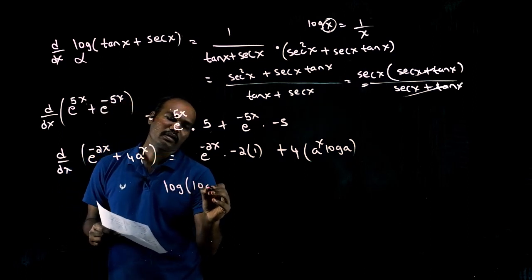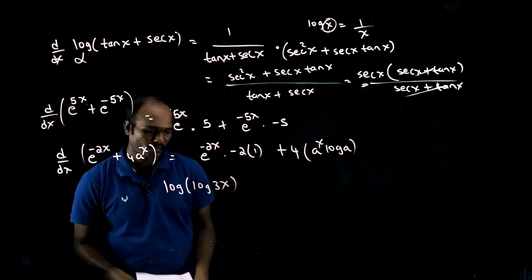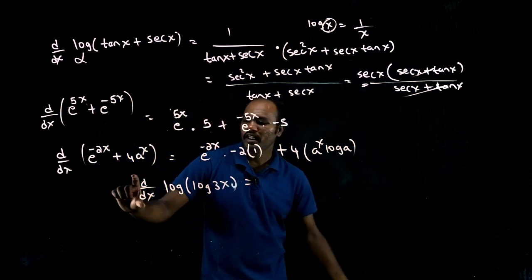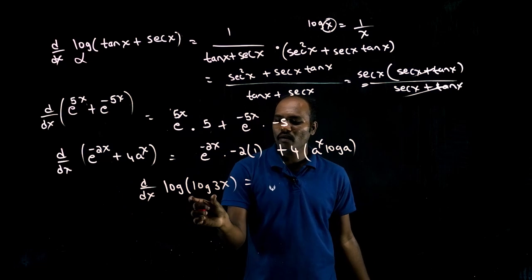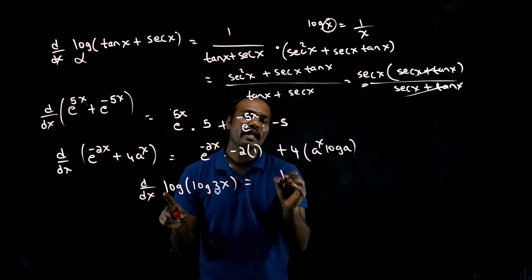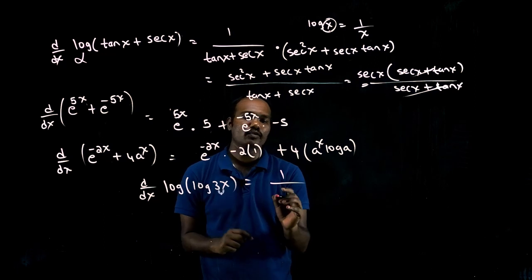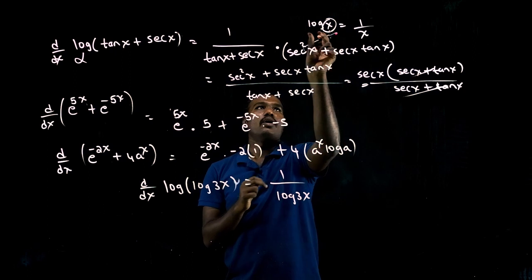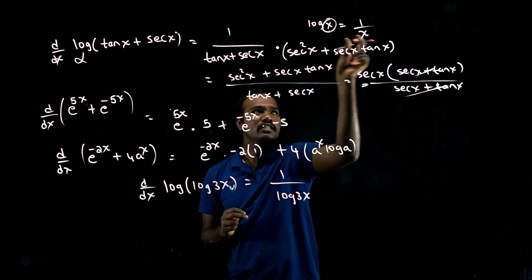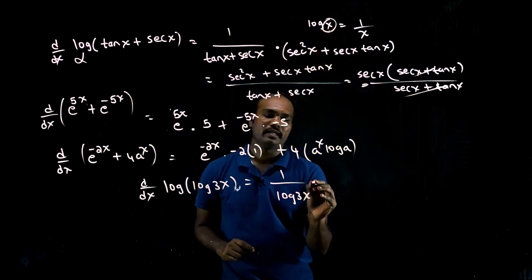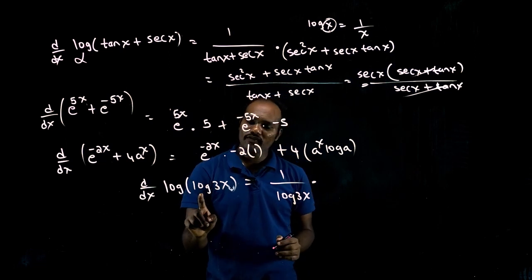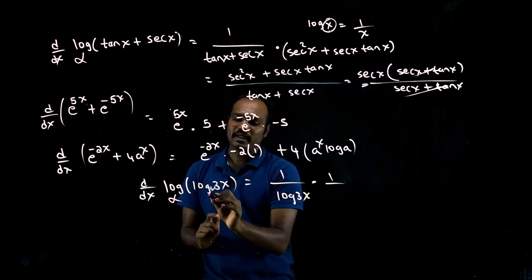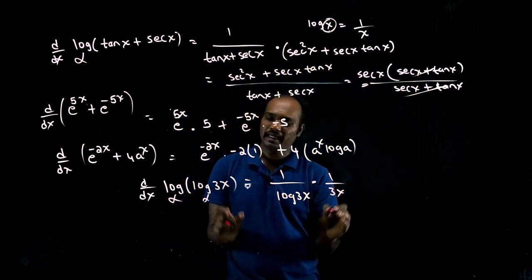Next: log of log 3x. Try to differentiate this. d/dx of log of log 3x. First, log differentiation is 1/x. So 1 over log 3x. Times. Then differentiate log 3x: 1 over 3x.